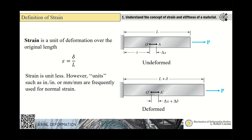Strain can be expressed as the percentage of deformation relative to the length. It is a unitless value because the unit of deformation — such as inches or millimeters — is the same as the unit of length, so they cancel out. Strain is therefore a unitless value.